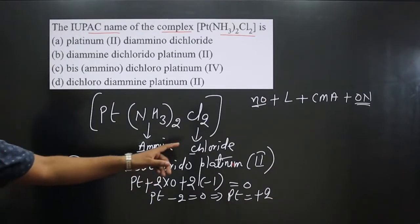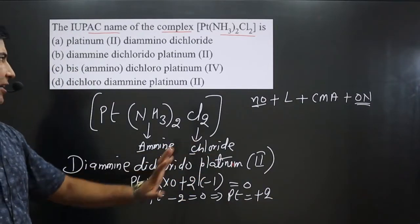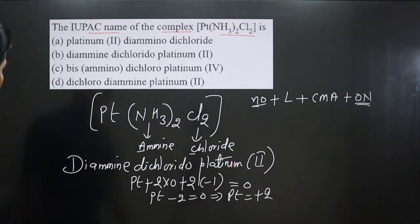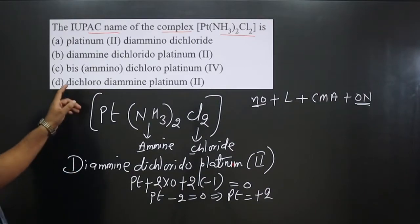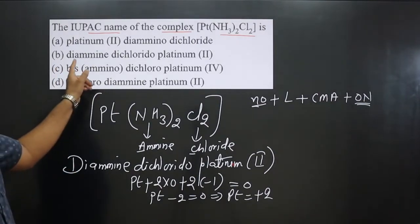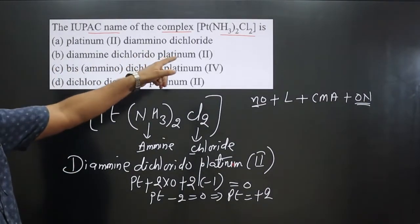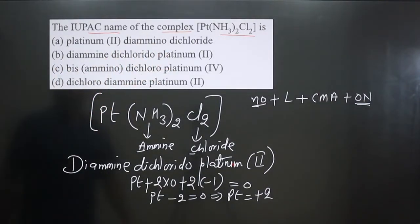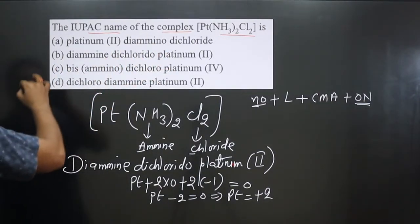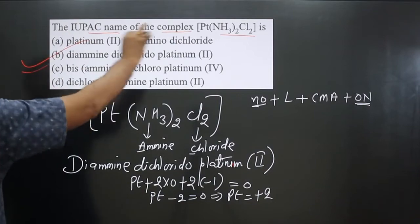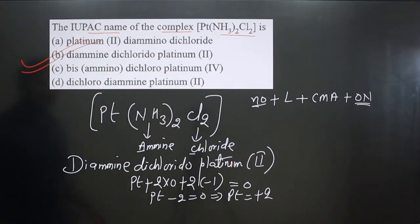The full IUPAC name is diamminedichloridoplatinum(II). Looking at the options, option B — diamminedichloridoplatinum(II) — is correct.